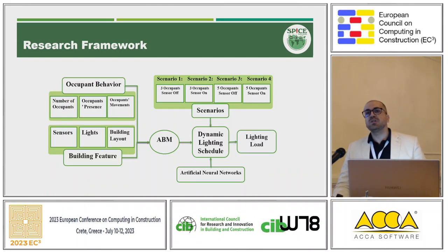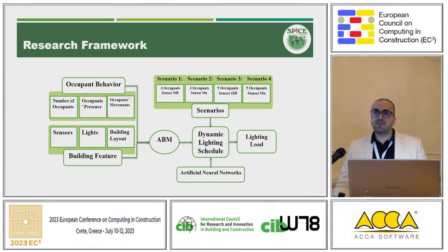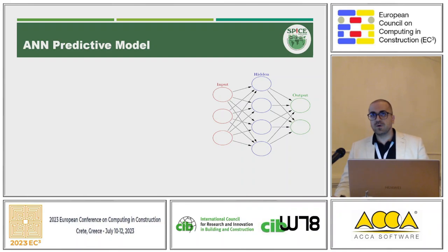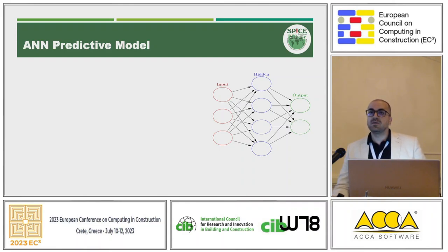Now we have this agent-based model simulation for our dynamic occupancy schedule with different scenarios. Another student of mine wanted to see if we can generalize this. This kind of modeling and simulation, specifically for small time steps, is very computationally heavy and we could only run the model for a few months. So another student tried to see if we can predict the lighting load profile using a machine learning technique — artificial neural networks. ANN follows patterns similar to the human brain's neural network, including an input layer, hidden layers, and an output layer.